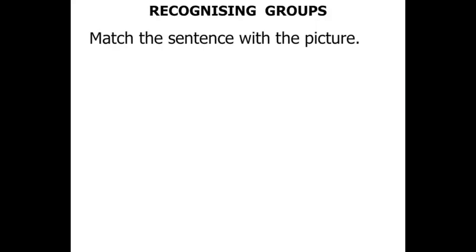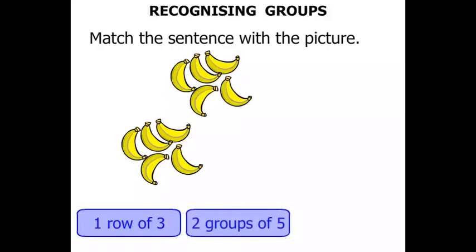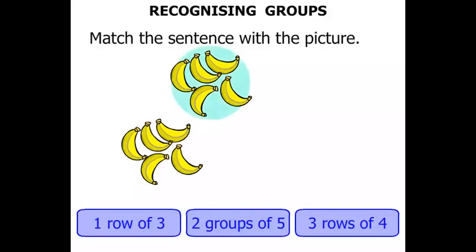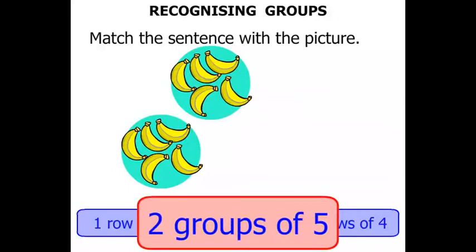Now in this one we need to match the sentence with the picture. We've got a picture of bananas. Is it one row of three, two groups of five, or three rows of four? Well, certainly we've got one, two — we've got two groups. How many in each group? One, two, three, four, five. We've got two groups of five.